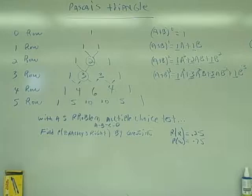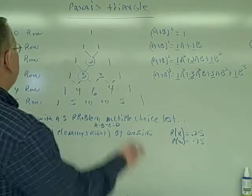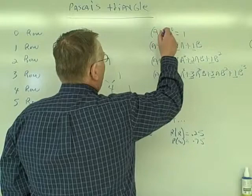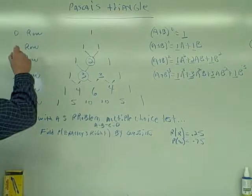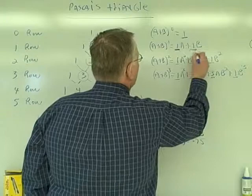So what good is it? That's the question. Well, it kind of goes along with this: the zero row is basically the coefficients of a plus b, or a binomial, which is why this goes along with the binomial theorem. a plus b to the zero would be one — anything to the zero power is one. The one row are the coefficients of a plus b to the one: I would have one a plus one b, which are those numbers.